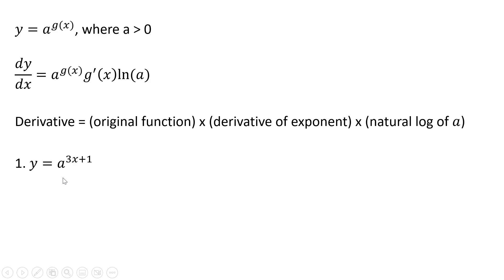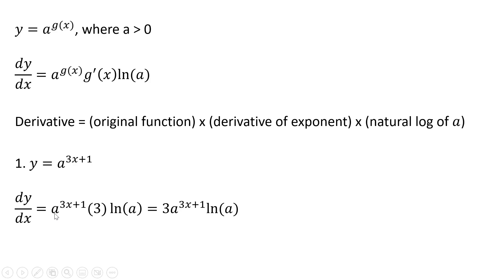Here's an example. The first thing we're going to do is rewrite the original function. Then we're going to take the derivative of the exponent — the derivative of 3x plus 1 is just 3 — and then we're going to take the natural log of a. Rewriting, we have our result.